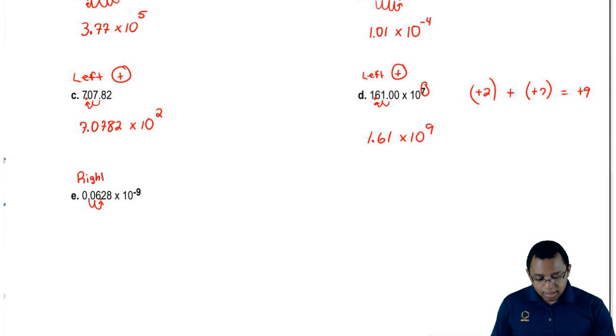Remember, when we move it to the right, the exponent is going to be negative. We move it over two spaces, so it's negative 2. To get the final exponent, remember, we started out with negative 9. Just add that negative 2 to that negative 9, and we'll have our final exponent calculation. It'll be negative 11.